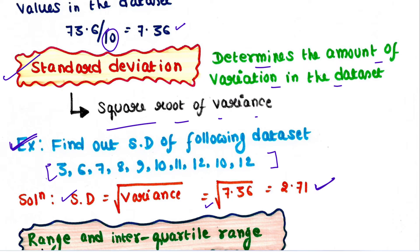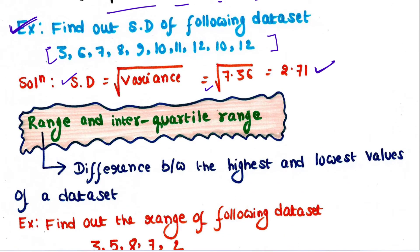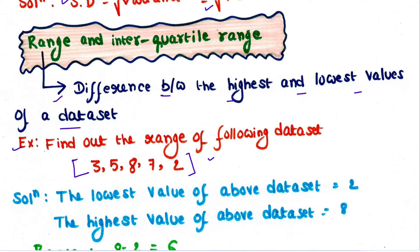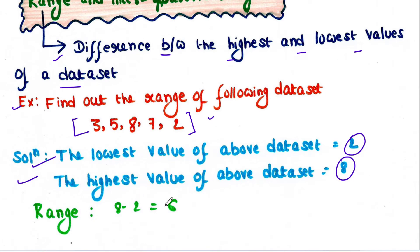Next, let's talk about range and interquartile range. Range is the difference between the highest and lowest values of a data set. For this example data set, the lowest value is 2 and the highest value is 8, so the range is 8 minus 2, which equals 6.